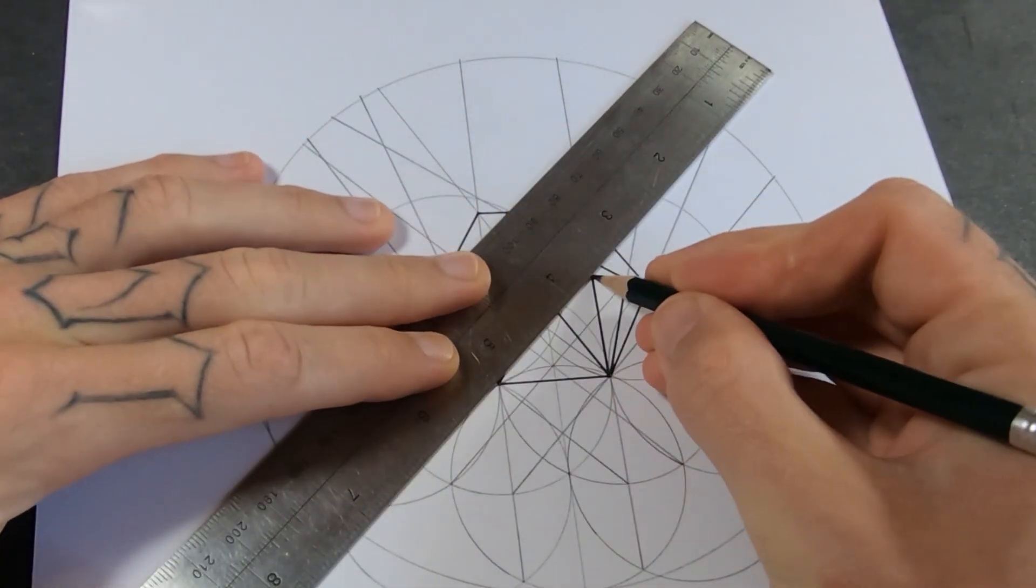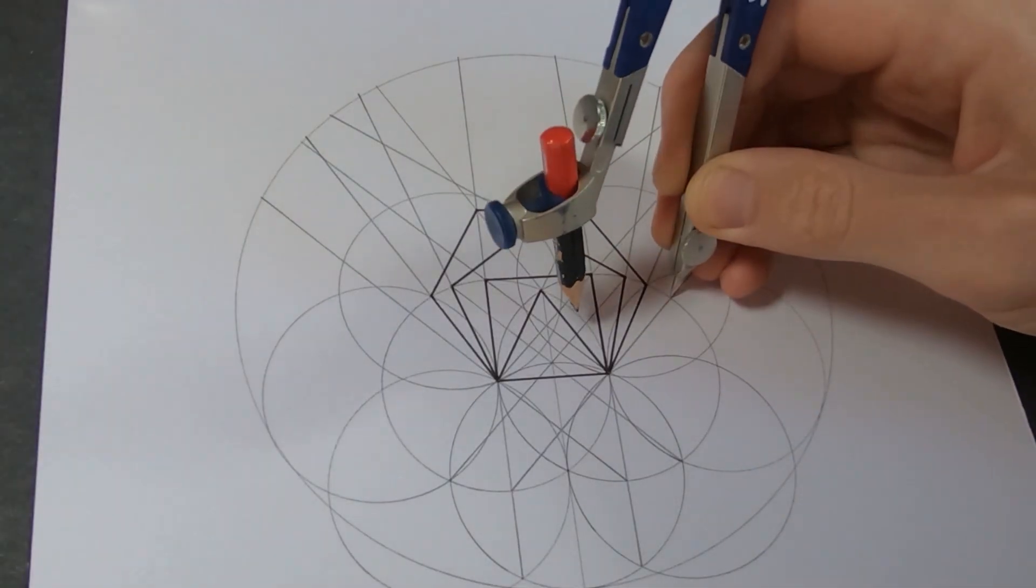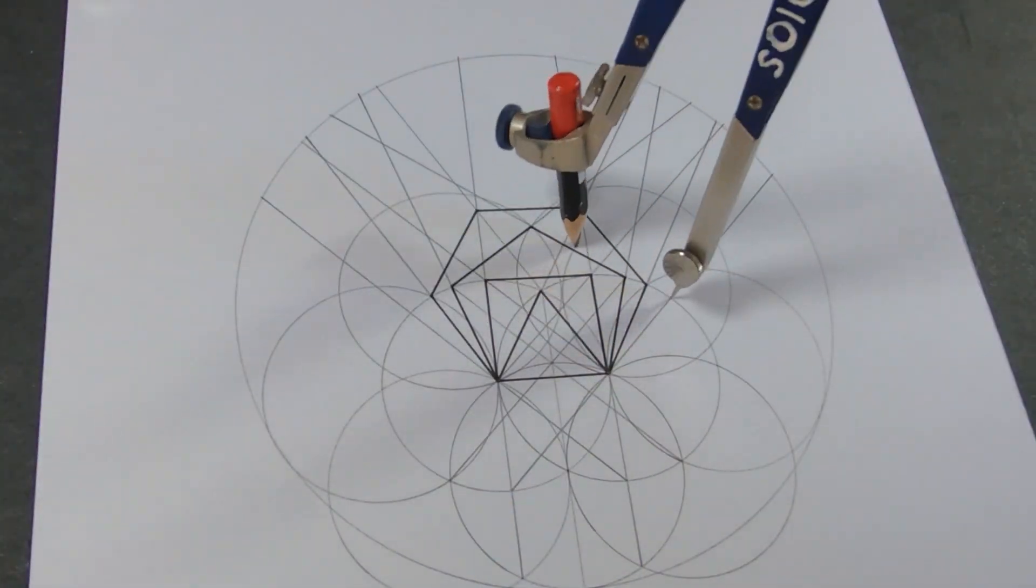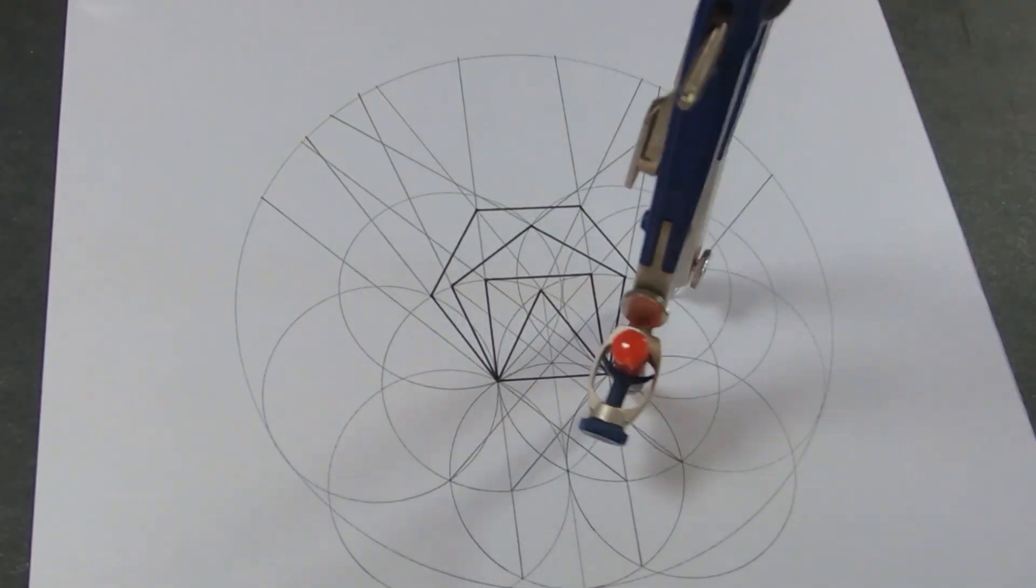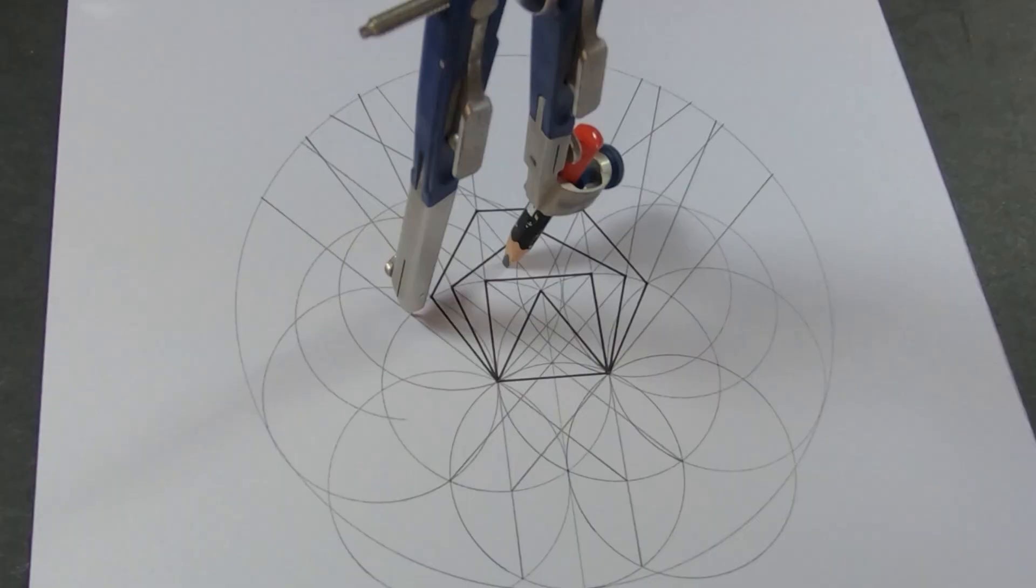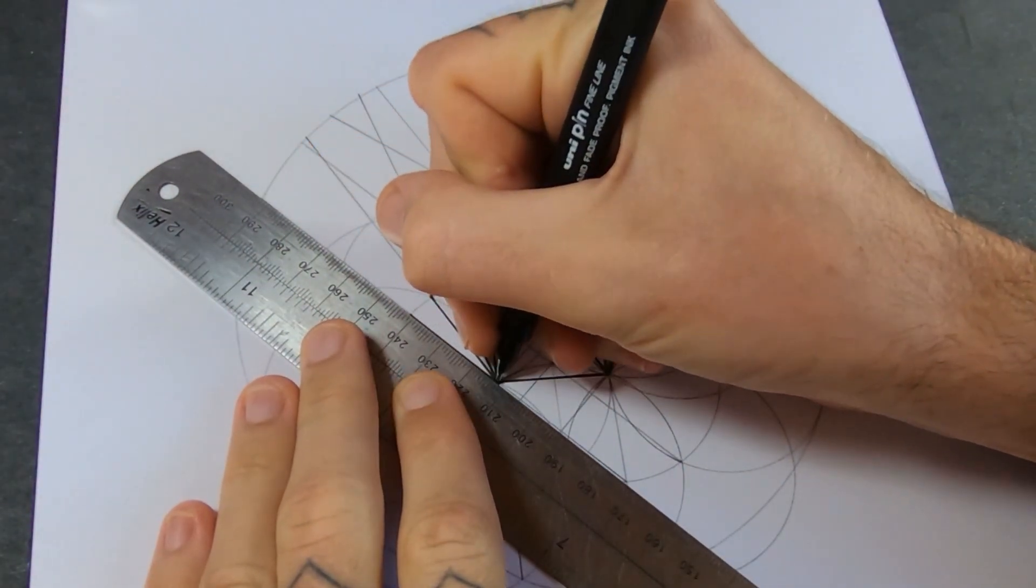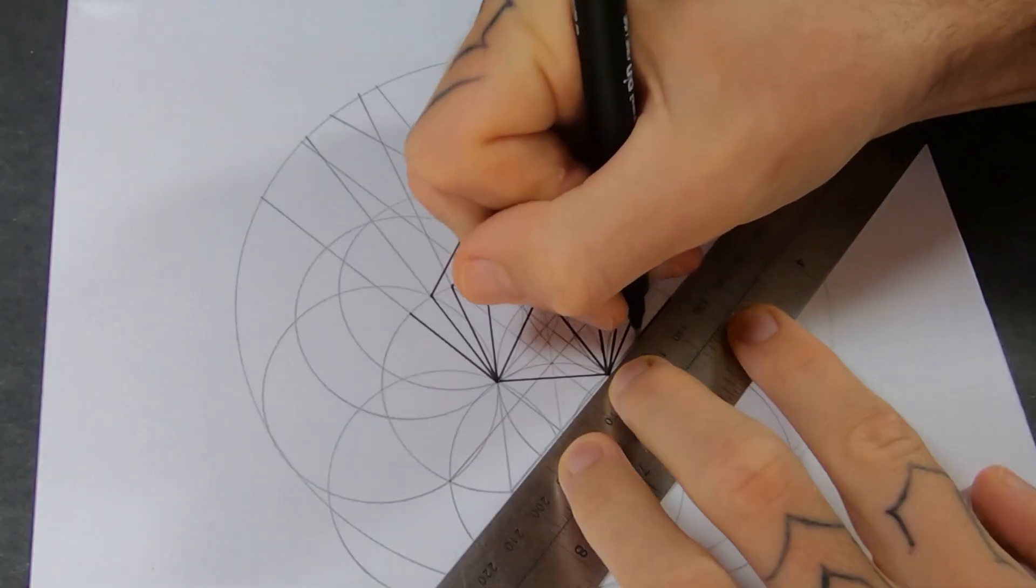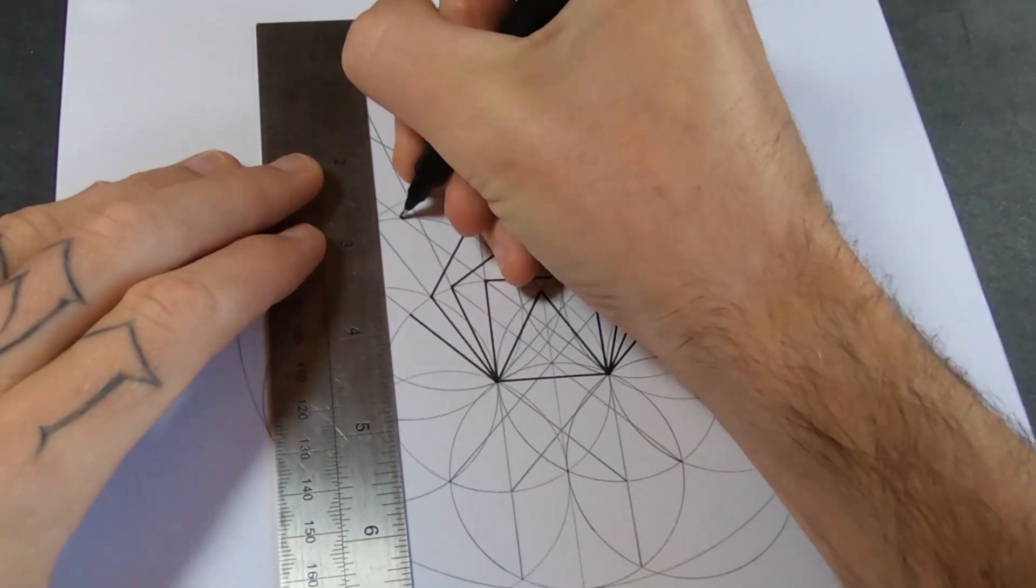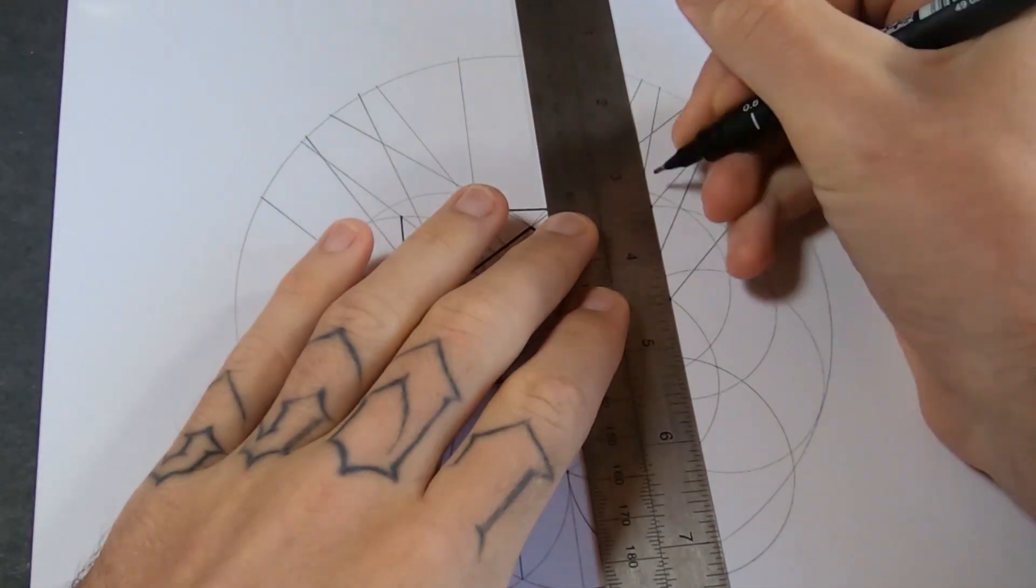All of the sides of these shapes are exactly the same size. The compass is still set to the length of the sides of these shapes. I'll put it here and draw a circle. Same on the other side, of course.